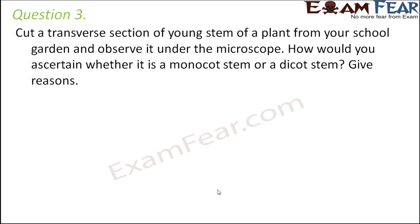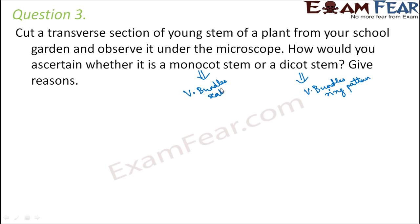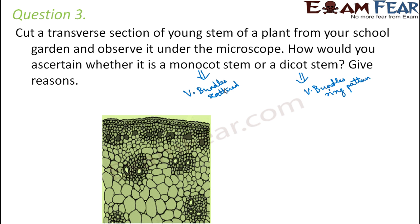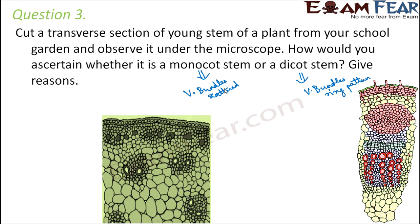In a monocot stem, the vascular bundles are scattered, whereas in a dicot stem the vascular bundles are arranged in a ring pattern. So by looking at these features you can tell whether it is monocot or dicot — in monocot they are scattered, in dicot they are arranged in a ring pattern.